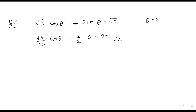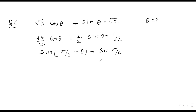This can be written as sin 60° and cos 60°, so it becomes sin(π/3 + θ) = sin(π/4). Using sin x = sin y ⟹ x = nπ + (−1)ⁿ y.